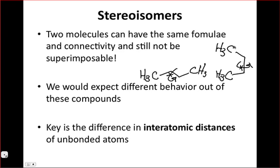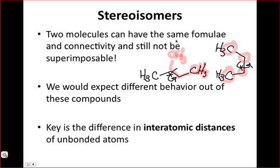Even though at room temperature rotation around that single bond is fast, if we froze out those conformations, simply moving one molecule on top of the other, we would not be able to superimpose them - one methyl group would not overlap with the other methyl group, so they would not be superimposable. This is a basic example of stereoisomers: two compounds with the exact same connectivity - carbon connected to carbon, connected to carbon, all sp3 carbons with hydrogens - but differing in the shape of the molecules and the fact that they cannot be superimposed.